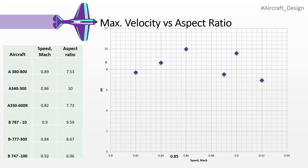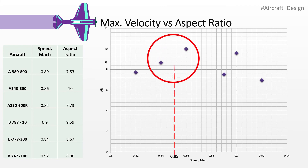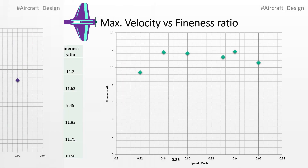Next, a graph between maximum velocity and aspect ratio is plotted. The optimum zone is identified from nearby scatter points. A vertical line from 0.85 Mach is drawn to the center of the optimum circle, and from there a horizontal line is drawn to the y-axis to read off the optimum aspect ratio.